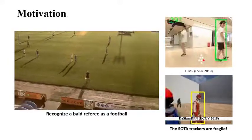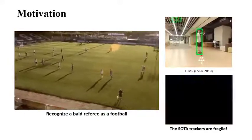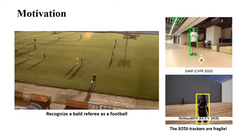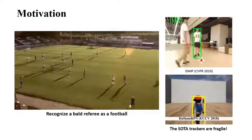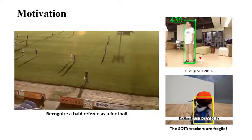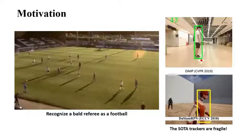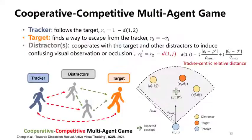In the soccer video, the camera was supposed to follow the football but always got distracted to shoot the bald head of the main character. To alleviate the distraction problem, we propose a mixed cooperative-competitive multi-agent game mechanism.